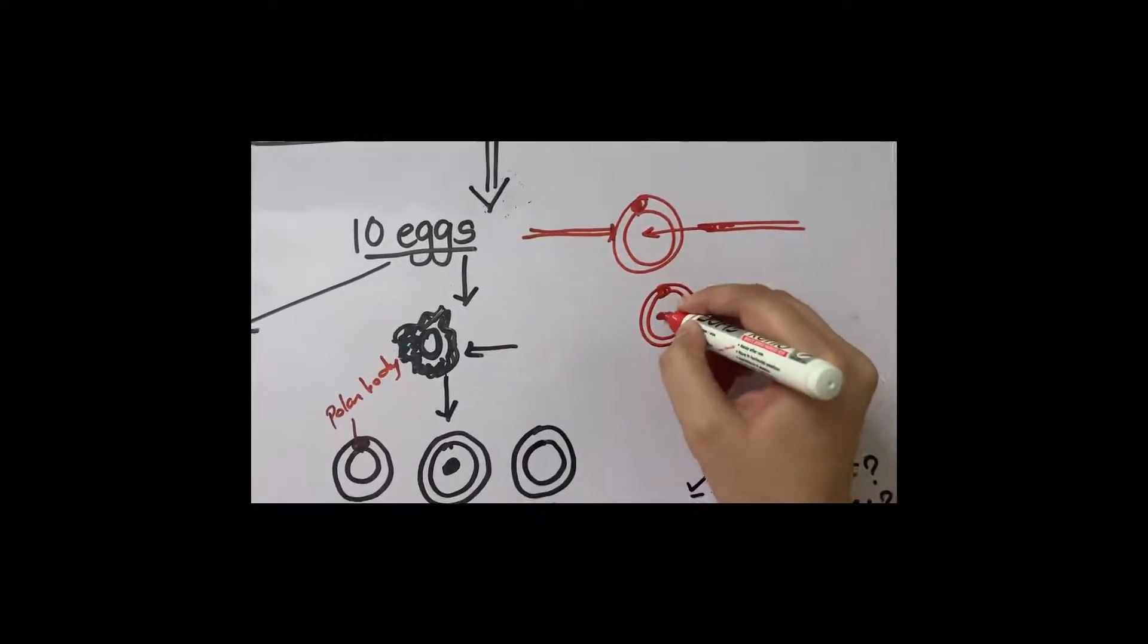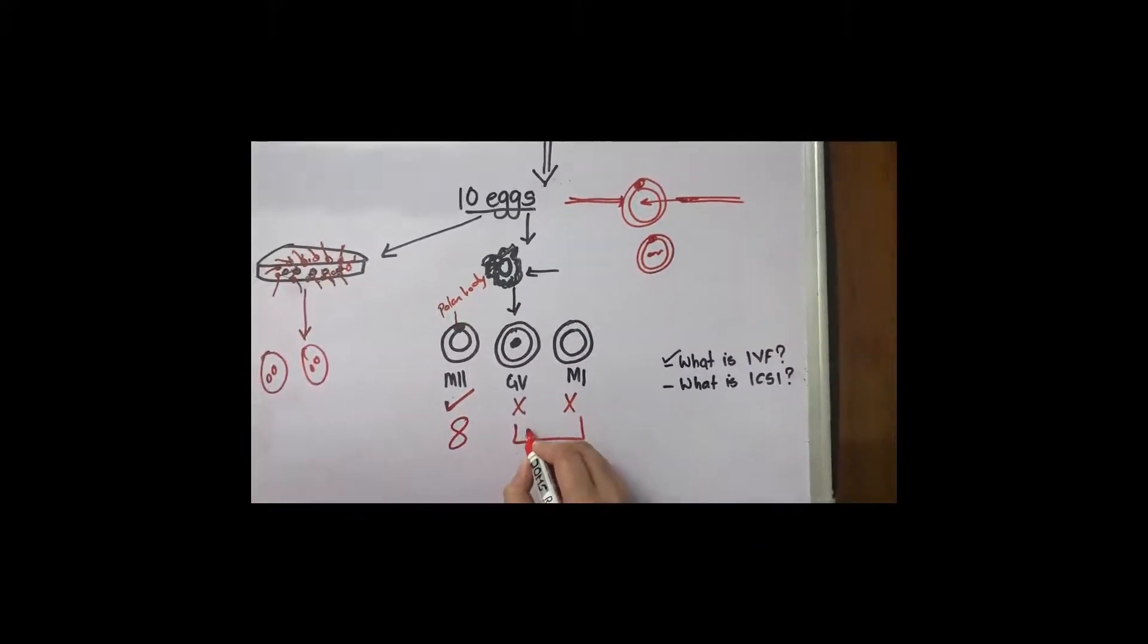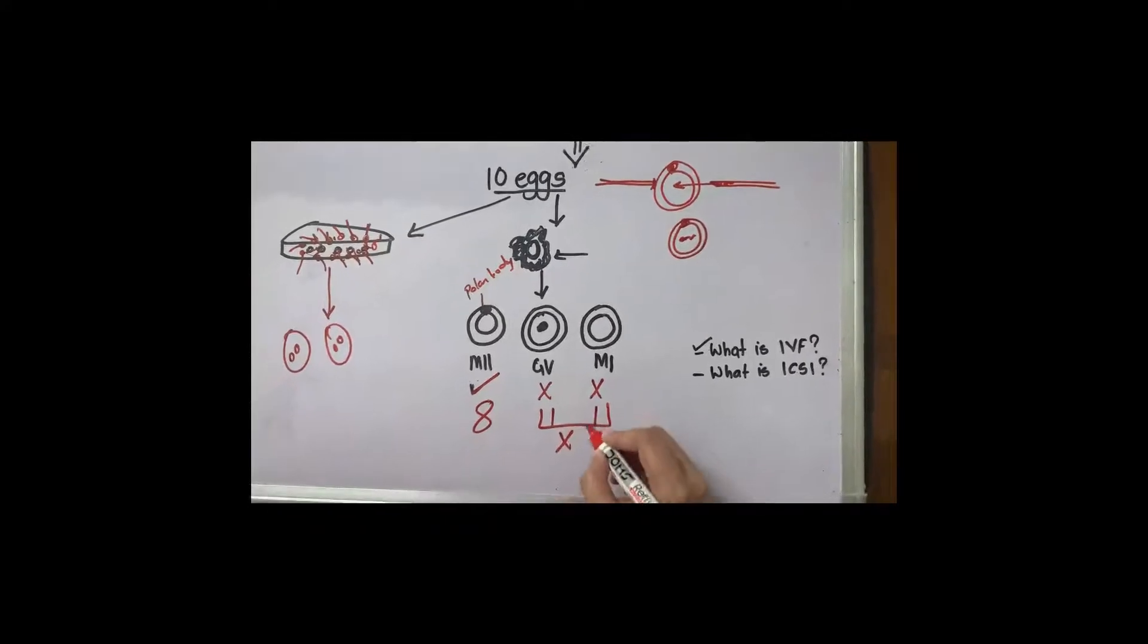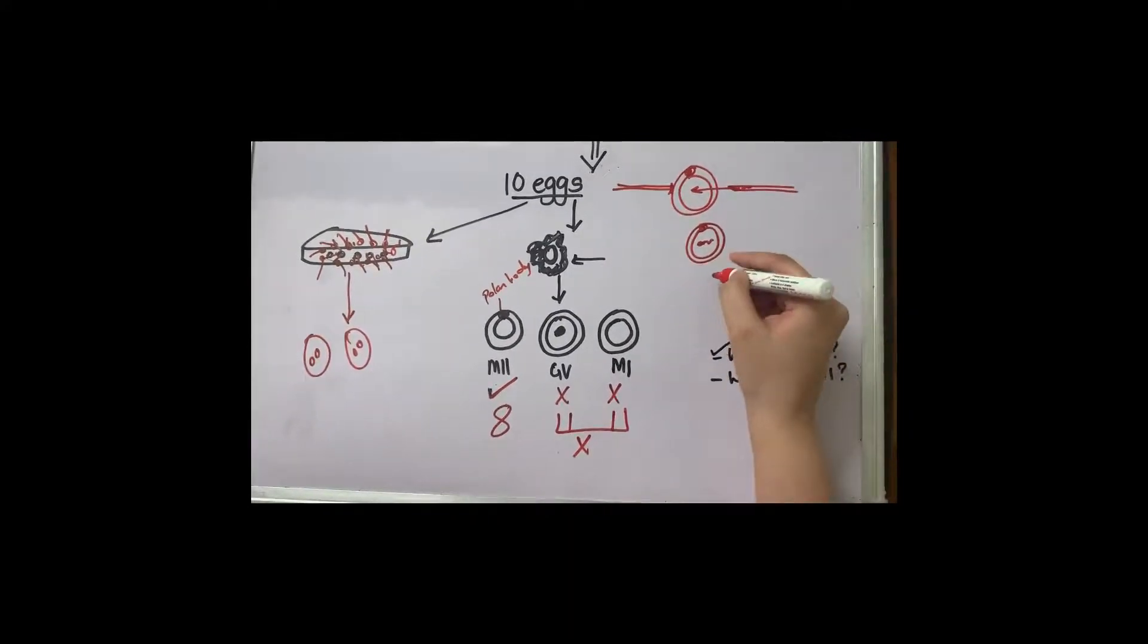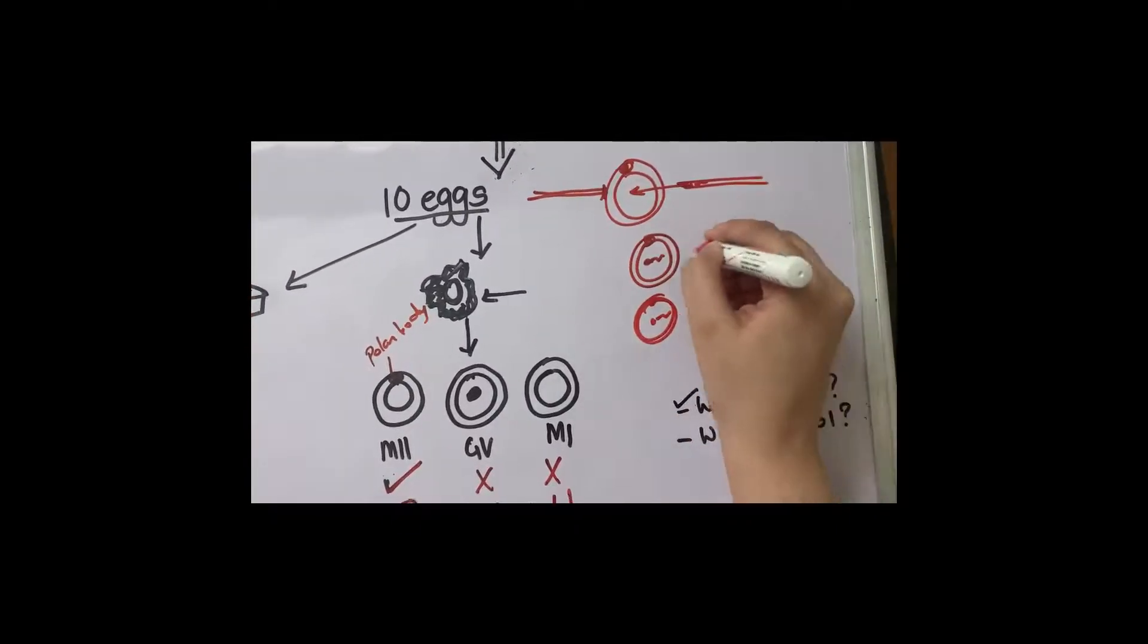Basically one egg, one sperm. Say if I had eight M2 and one GV and one M1, I have eight eggs to inject. I will take all these eight eggs and I will start injecting it with the sperm. So this is what is ICSI.